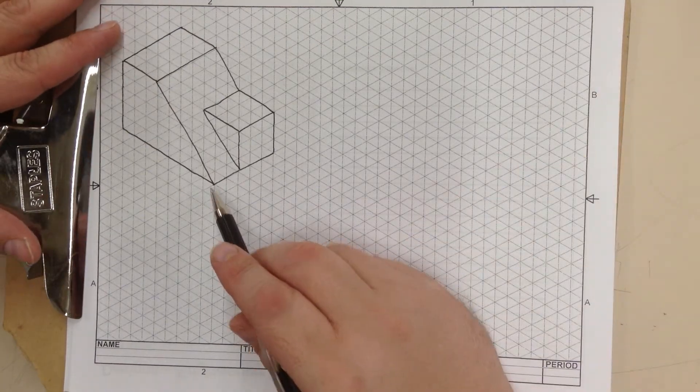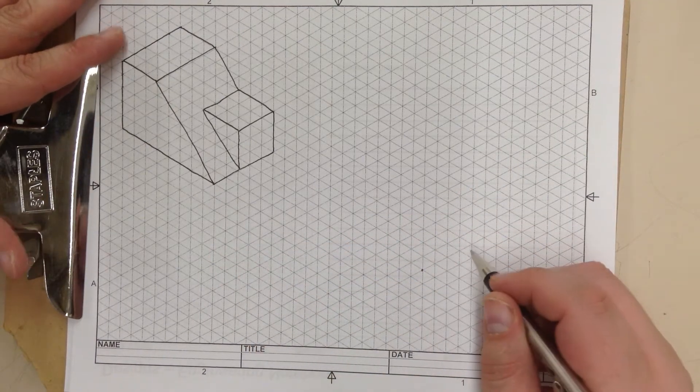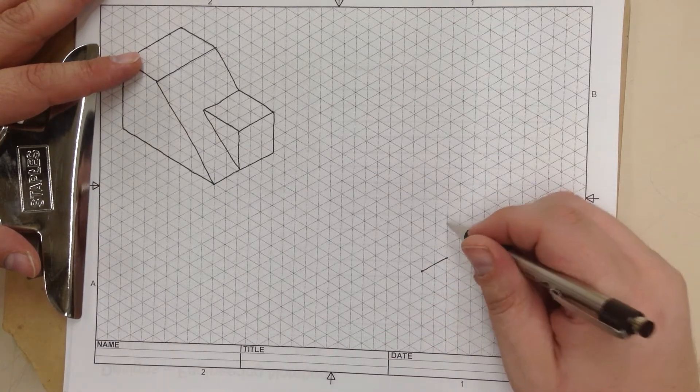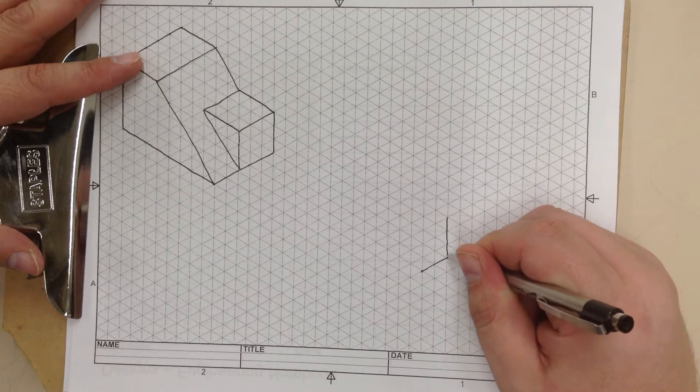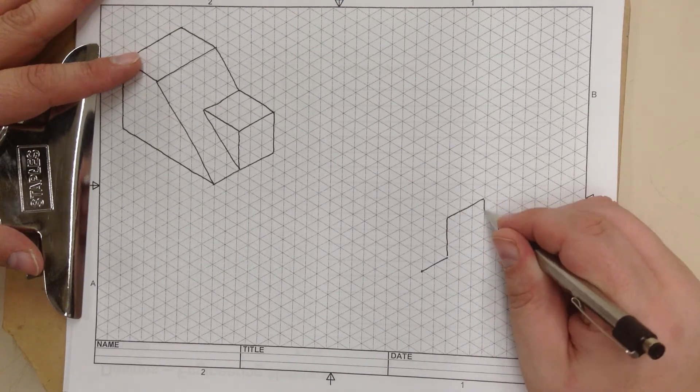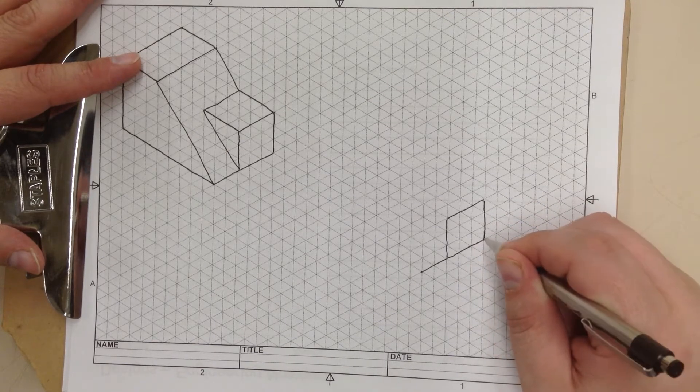Okay, let's go ahead and start at our origin point, which I'm going to make right there. It goes 2 over, then 3 up, 3 over, 3 down, close that shape.